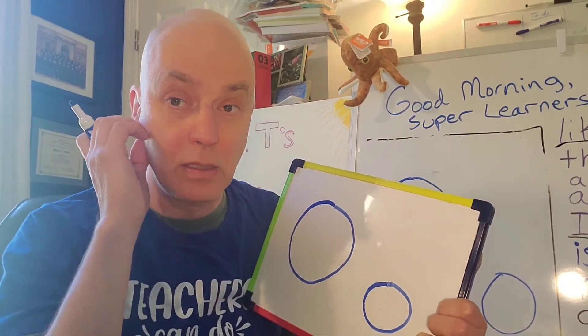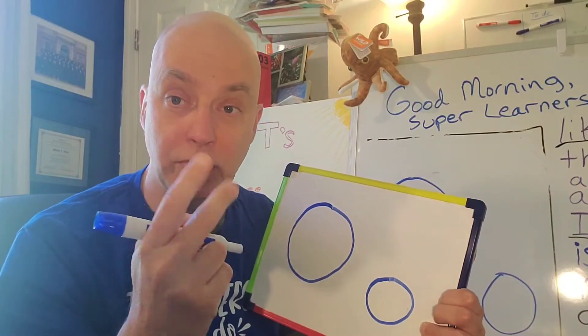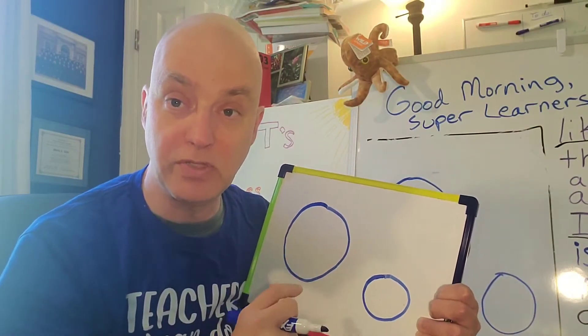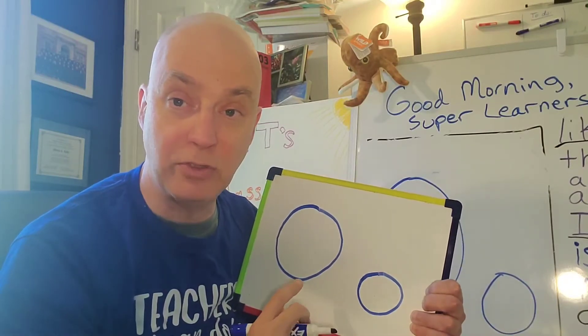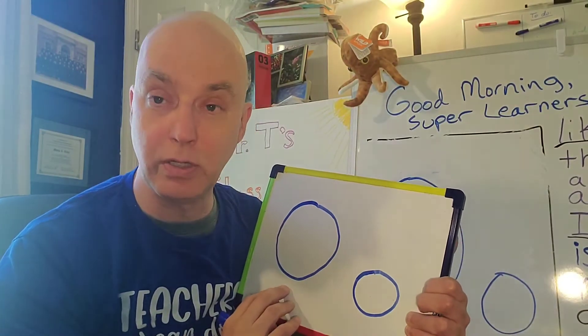Now, as I said, O has two sounds because it's a vowel. Sometimes it'll say its name, O. Most of the time, though, it's going to have a short vowel sound. And it's going to go AH.